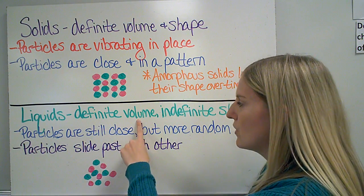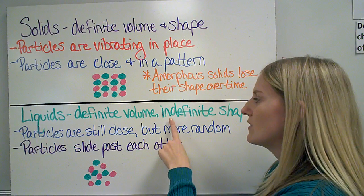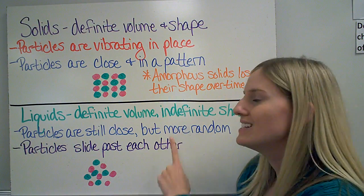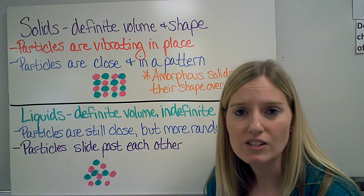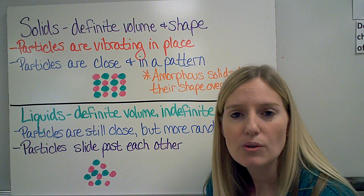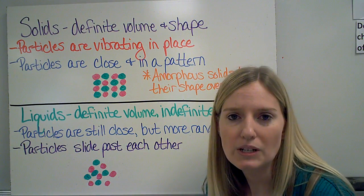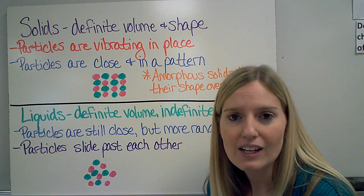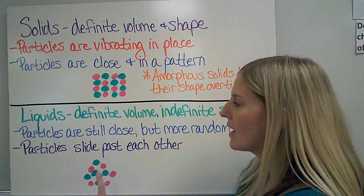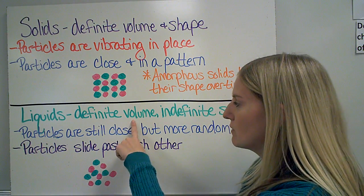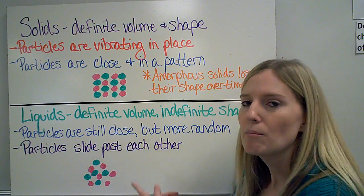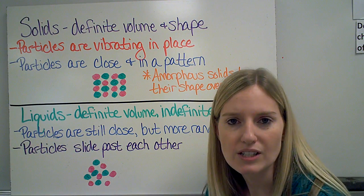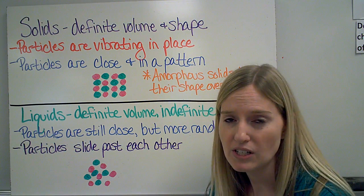Liquids have a definite volume, but they have an indefinite shape. Indefinite means that it can change. So when I have a liquid and I put it into a new container, it will still take up the same amount of space, but it's going to take the shape of whatever container that I've put it in.